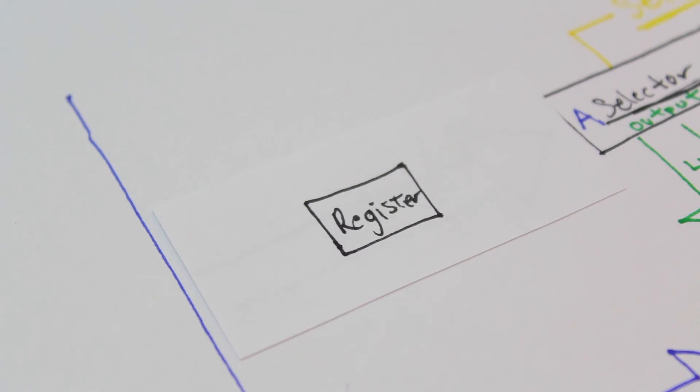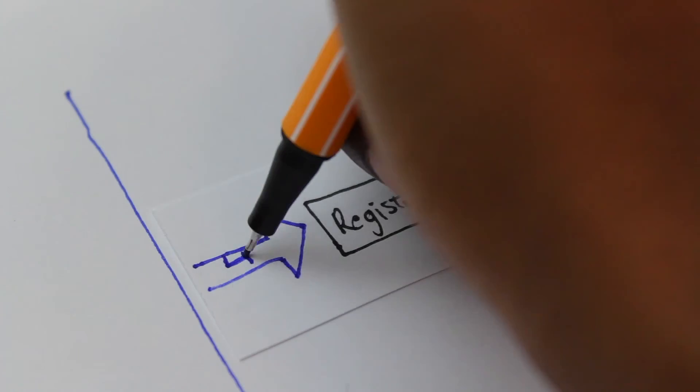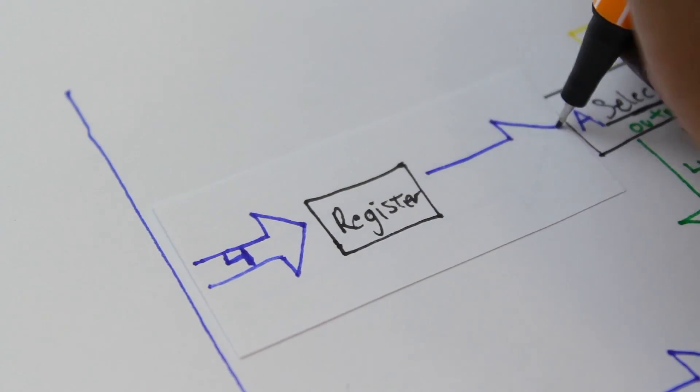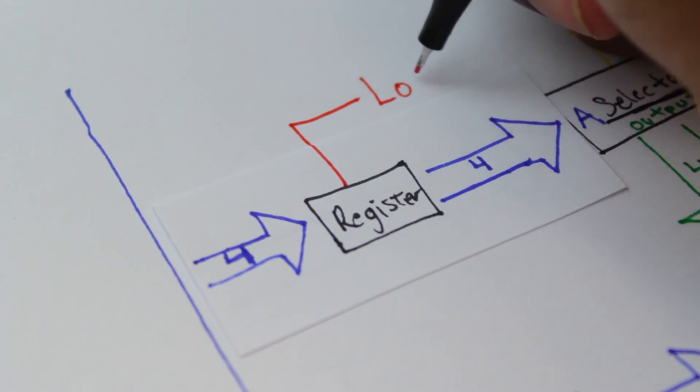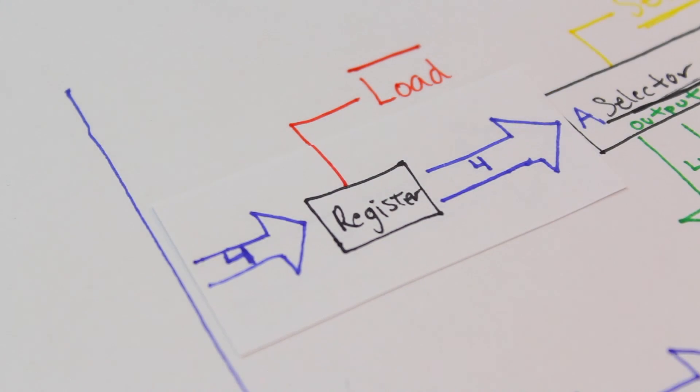So, here is what our diagram will look like. We'll have four bits coming into the register from the bus, four bits coming out of the register and into the selector IC. Then we'll have a load control line so we can say load information from the bus for the first clock cycle, but not the second clock cycle.